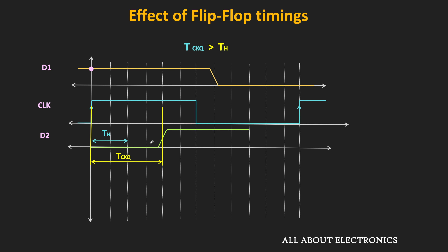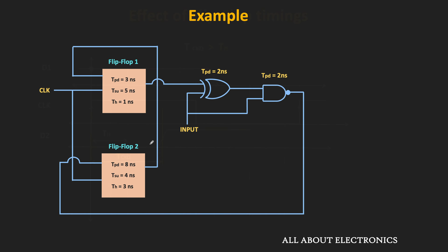The setup time and propagation delay of the logic components decide the maximum operating clock frequency, while the hold time does not play any role in deciding the maximum clock frequency. Based on that, let us take one example from the GATE examination. Similar to our previous circuit, we have two flip-flops, and we have been given the setup time, hold time, and propagation delay of the two flip-flops. The same clock signal is applied to both flip-flops. The output of the first flip-flop is applied to logic gates, and the output of the logic gate is connected back to the second flip-flop. The output of the second flip-flop is connected back to the first flip-flop. We have been asked to find the maximum operating clock frequency up to which this circuit will work reliably.